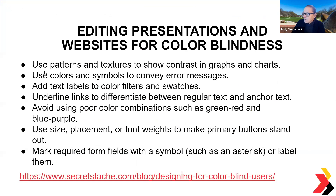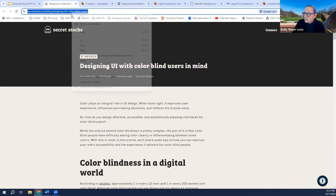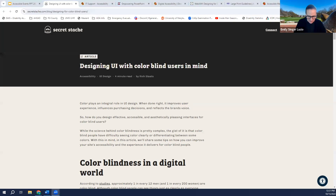For editing presentations and websites for color blindness: use patterns and textures to show contrasting graphs and charts. Use colors and symbols to convey error messages. Add text labels to color filters and swatches. Underline links to differentiate between regular text and anchor text. Avoid poor color combinations such as green/red and blue/purple. Use size, placement, or font weights to make primary buttons stand out. Mark required form fields with a symbol such as an asterisk or label them.